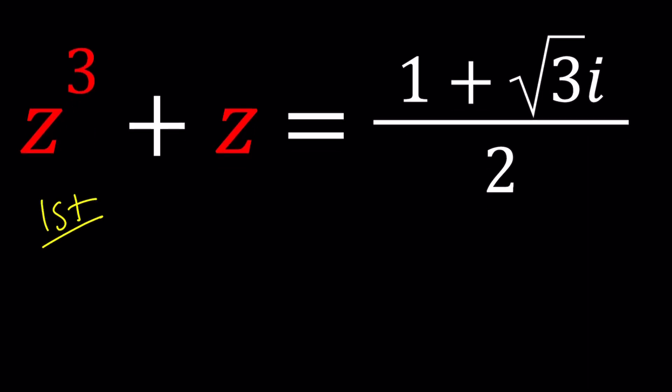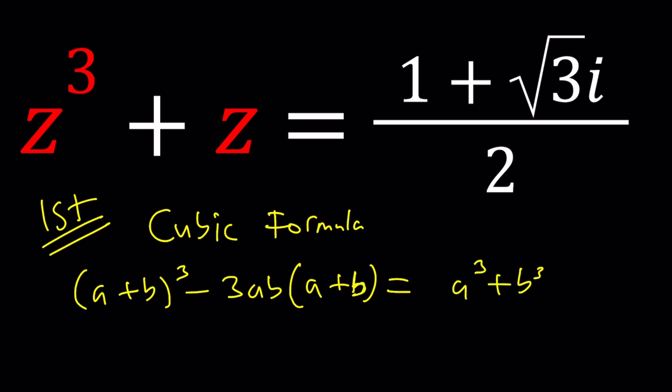First method: we could use the cubic formula, right? And how does the cubic formula work? You can come up with something like this: (a+b)³ - 3ab(a+b) = a³ + b³. Remember this is an identity and we just used it in another video. Actually we're going to - it's going to come up in one hour on CyberMath. So yes, I recorded earlier but it's going to come up later.